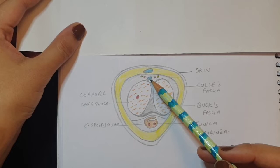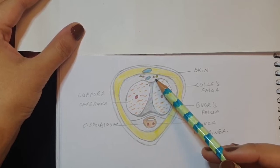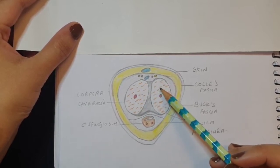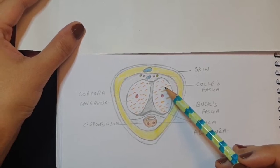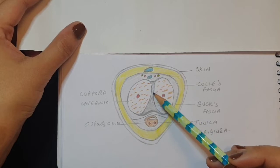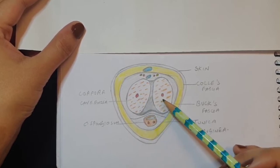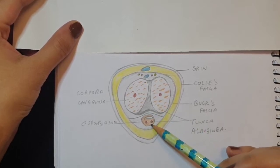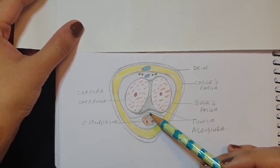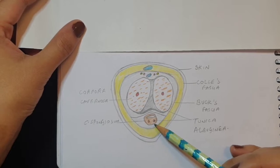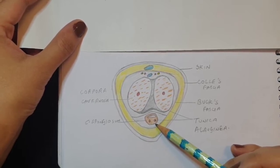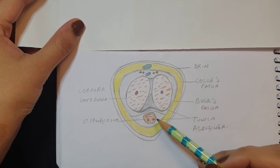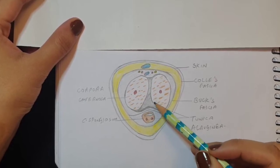In between Buck's fascia you have a deep dorsal vein, on either side you have the deep dorsal penile arteries, and you have the dorsal nerves. On either side you have the corpora cavernosa, which are paired muscular components of the body of the penis, separated by a septum in between. Each has a deep artery as well. You have the corpus spongiosum, which is a single structure in which lies the urethra, along with arteries of the corpus spongiosum. The corpora cavernosa are encircled by a layer of tunica albuginea, as is the corpus spongiosum, so there is a layer of separation between the two.